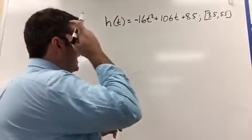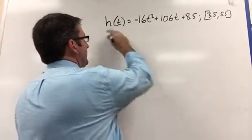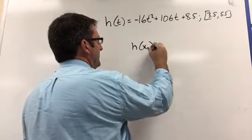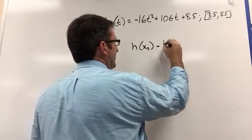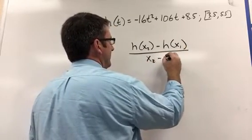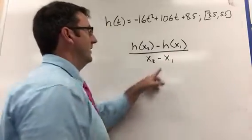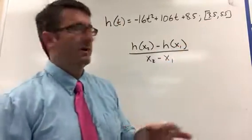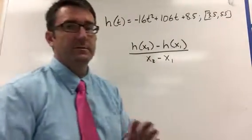And remember, to find average rate of change, that's going to be h(x2) minus h(x1) divided by x2 minus x1, where x1 is the smallest number on our interval, x2 is the largest number on the interval.